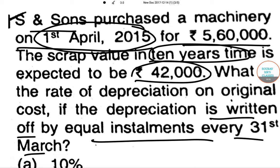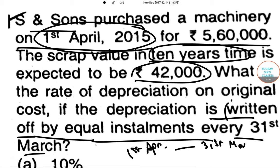Now take care, students — we will tell you which method we will apply. One thing: written off by equal installments every 31st March means the end of your financial year. It starts 1st April, ends 31st March. So take care of equal installments.